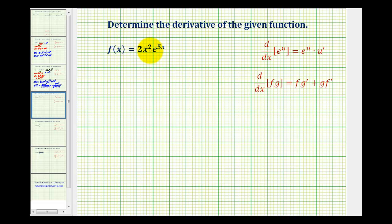The first function we'll let equal 2x squared, and the second function will be e to the power of 5x. So we'll let f equal 2x squared, and then we'll let g equal e to the power of 5x.